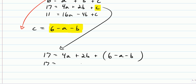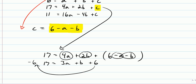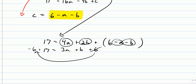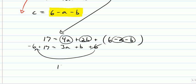So if you simplify that, you got 4a minus a, that's 3a. You got 2b minus b, that's plus b. And you got a plus 6. And you can move the 6 over to the other side and make it a minus 6. So we're going to end up with 11 equals 3a plus b.